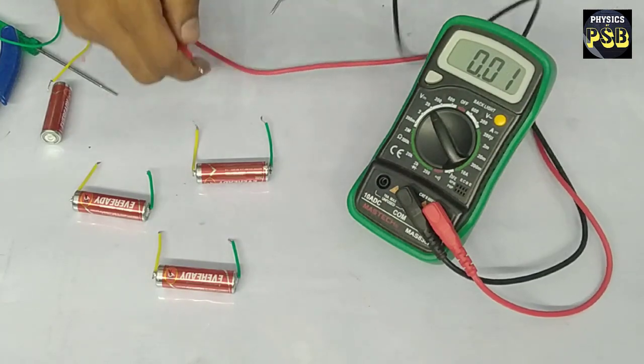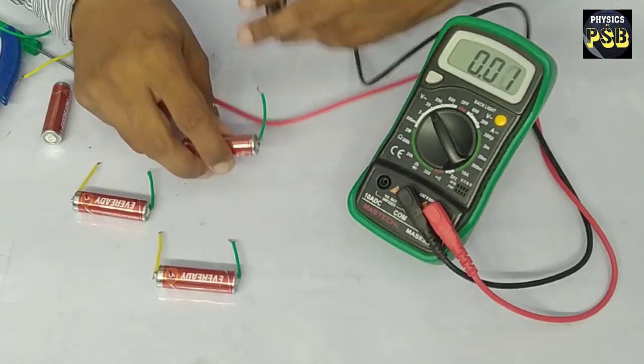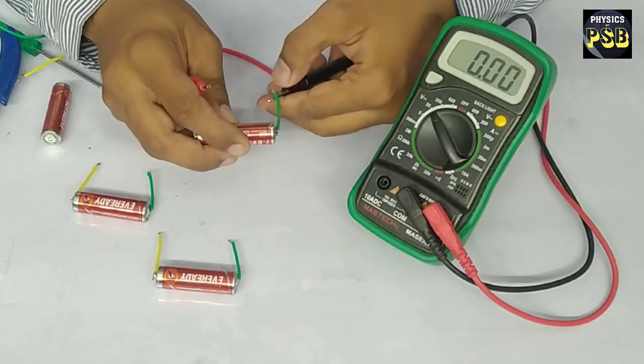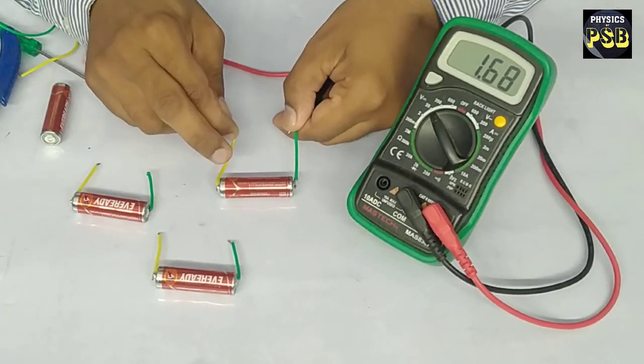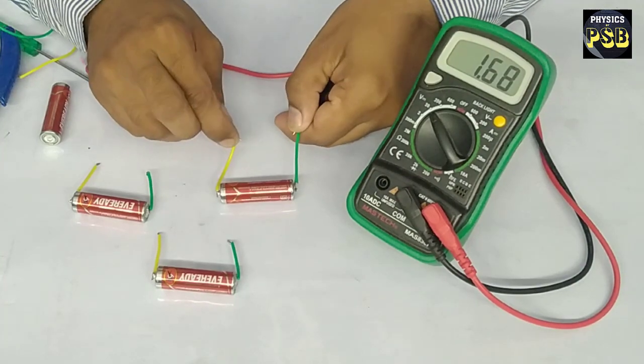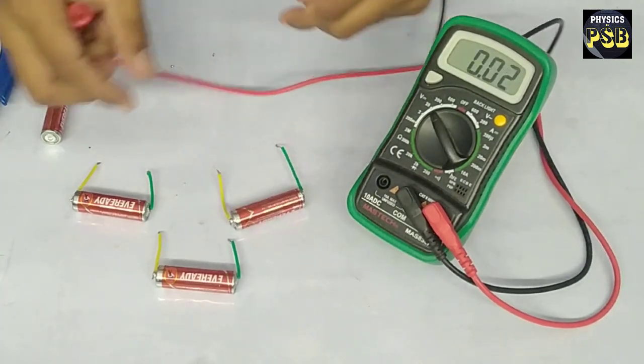Now I will check the voltage or the EMF with the help of multimeter. First I will check the EMF of this cell. It is 1.68.